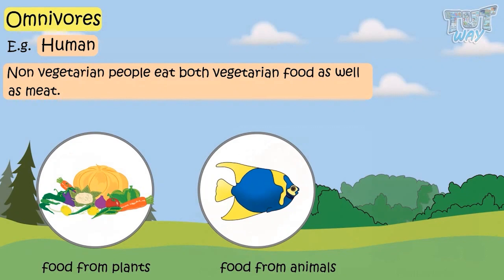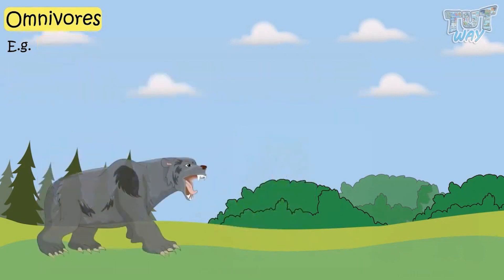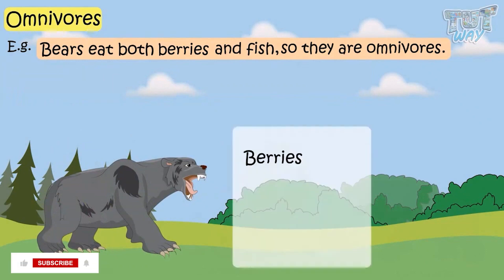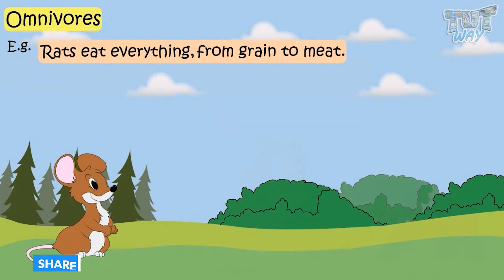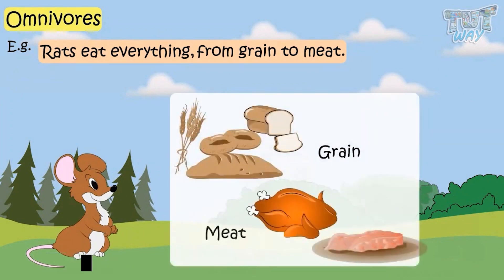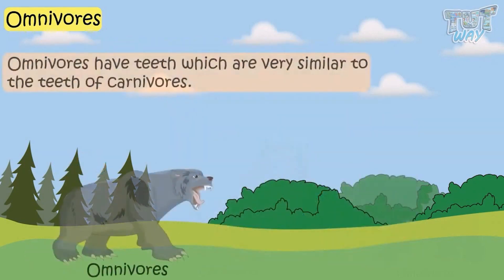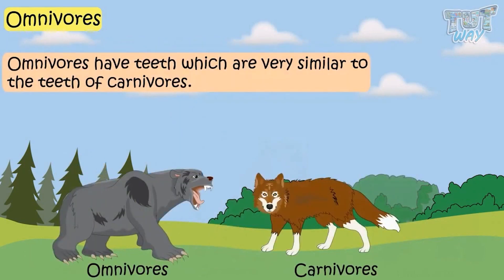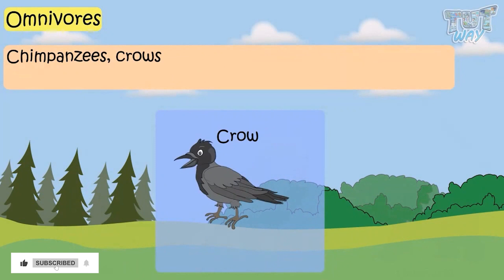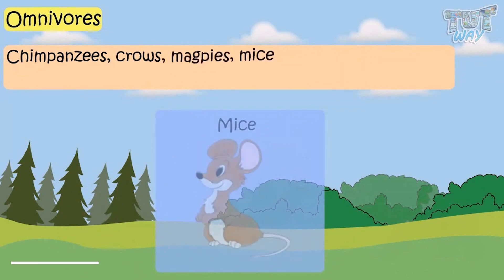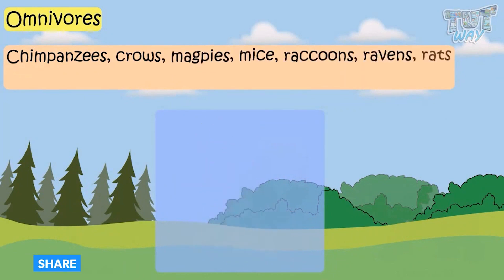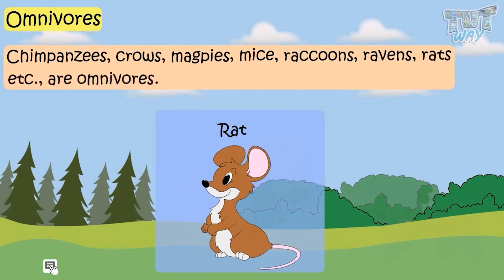Now let's see some examples of omnivorous animals. Bears eat both berries and fish, so they are omnivores. Rats eat everything from grains to meat, so they are omnivores. Omnivores have teeth which are very similar to carnivores. Chimpanzee, crow, magpie, mice, raccoon, raven, and rats are also omnivores.